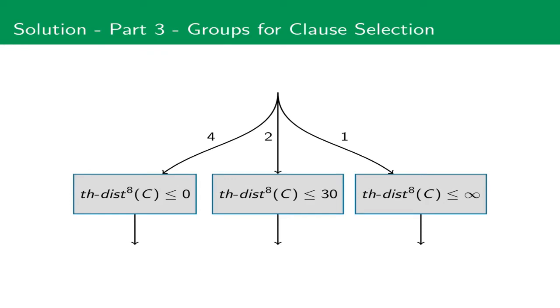More generally, our framework provides the following parameters. We can choose the number of groups, the expected amount of theory reasoning, the cut-offs used to group clauses together, and the ratio which we use to alternate between picking from different groups.